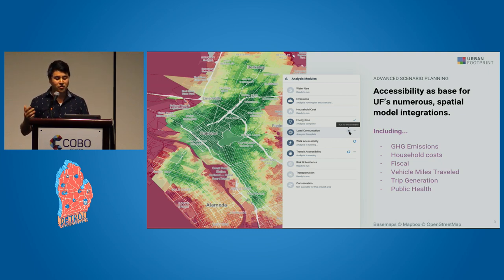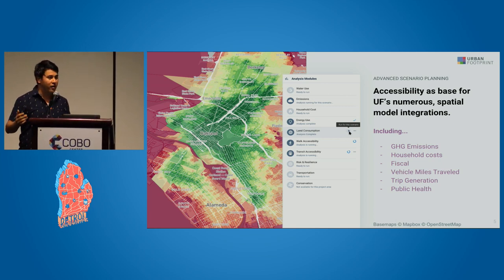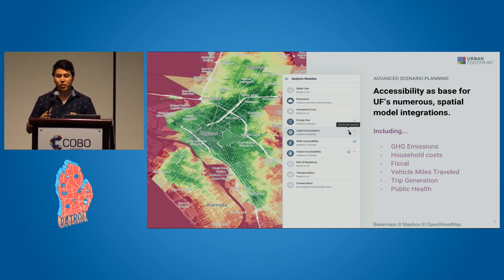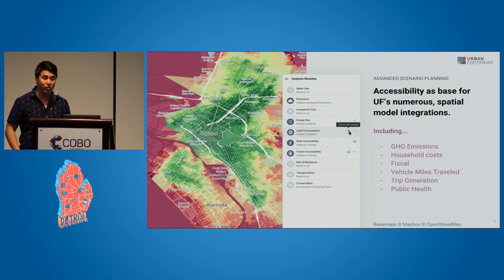Our modules cover greenhouse gas emissions, household costs, fiscal vehicle-induced vehicle miles traveled, trip generation, public health, and more. All of these modules utilize our accessibility module at their core. Your ability to access resources defines the agent's behavior on the network, and that's critical for changing mode choice or travel patterns in an area.